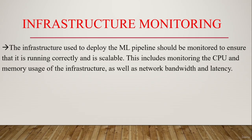Various techniques and tools are available for infrastructure monitoring, including log analysis, performance monitoring, and fault detection. Log analysis involves analyzing system logs to identify issues or errors that can affect the performance of the machine learning pipeline. Performance monitoring involves tracking key performance indicators such as response time, latency, and throughput to ensure the infrastructure is performing optimally. Fault detection involves detecting and responding to system failures such as server crashes or network outages to minimize downtime. Infrastructure monitoring should be integrated into the machine learning pipeline and automated. Effective infrastructure monitoring can improve reliability and availability, reduce the risk of downtime and data loss, and lead to better business outcomes.